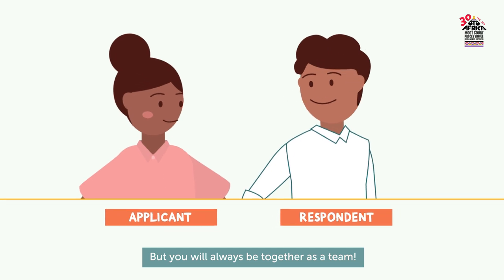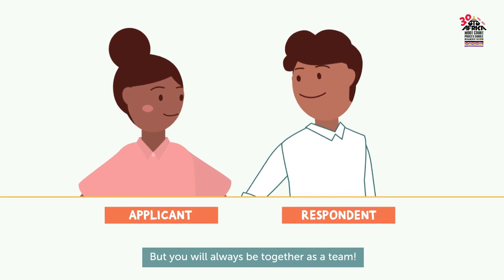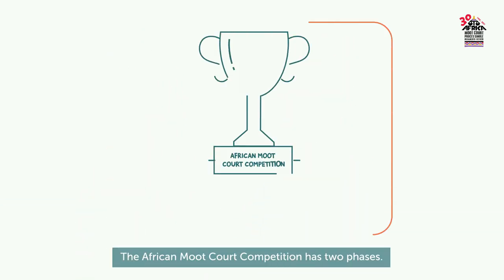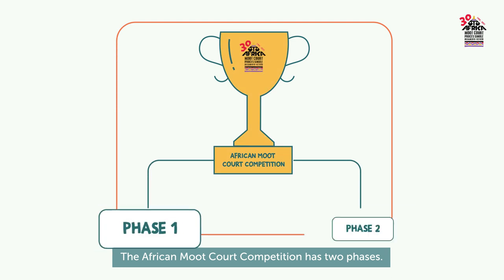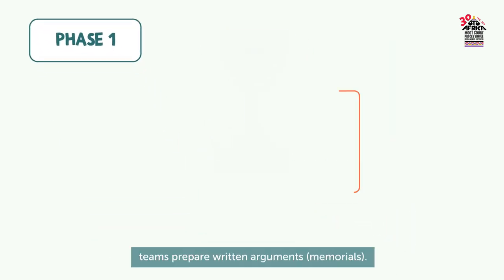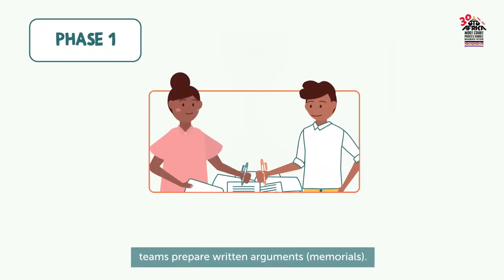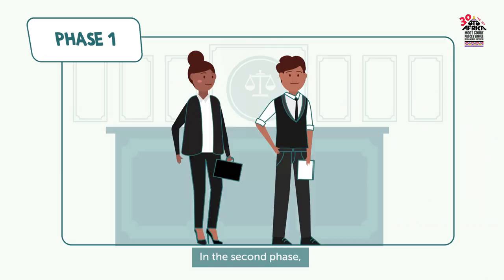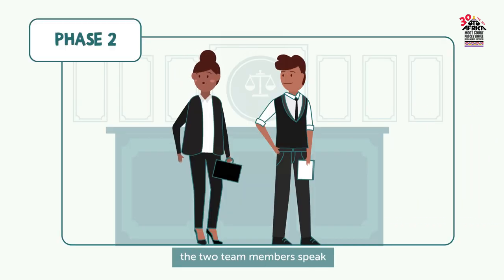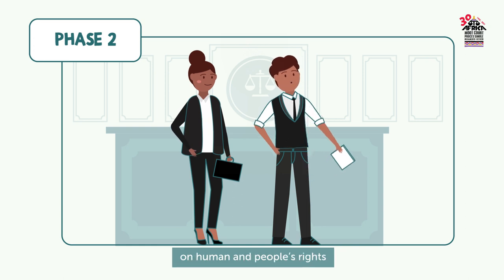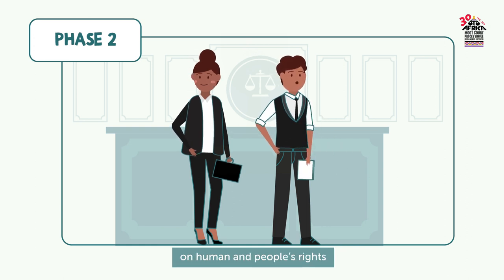But you will always be together as a team. The African Moot Court competition has two phases. In the first phase, teams prepare written arguments or memorials. In the second phase, the two team members speak before the simulated African Court on Human and Peoples' Rights.